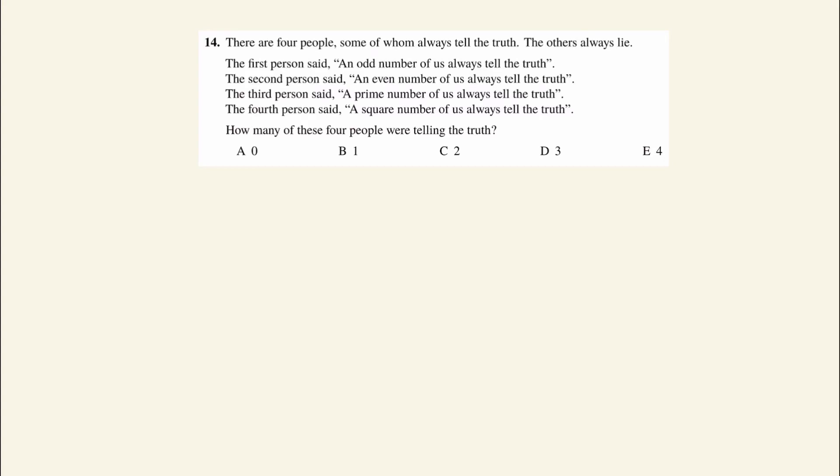There are four people, some telling the truth and others lying. The first person said an odd number are always telling the truth, the second said an even number, the third a prime number, and the fourth a square number. If we start by labeling each person as A, B, C, and D...